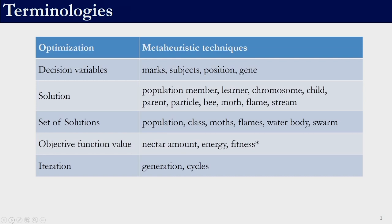Before getting into TLBO, let us familiarize ourselves with the terminologies that we will be using in metaheuristic techniques and how they relate to the terminologies we have been using so far in optimization. In optimization we were using decision variables. Decision variables are also known as marks, subjects, position, or gene depending upon the metaheuristic technique that we are working with. A solution is called as a population member, a learner, chromosome, child or parent. A set of solutions is known as population, class, moths, flames, water body or swarm. The objective function value is also known as nectar amount, energy, or fitness depending upon the metaheuristic technique.